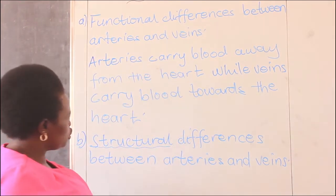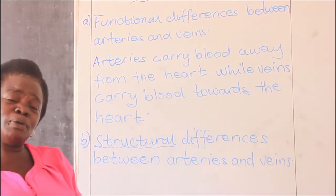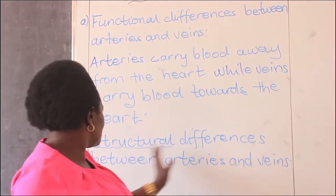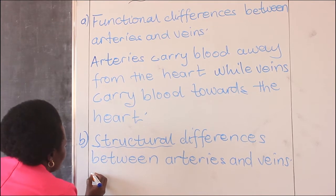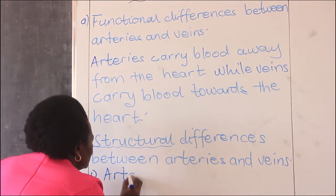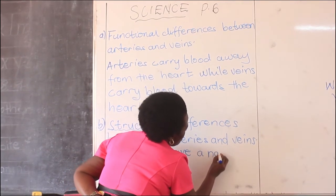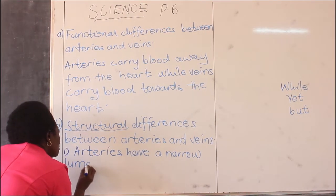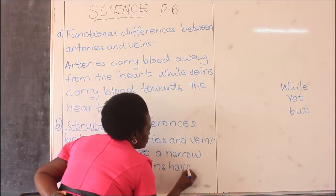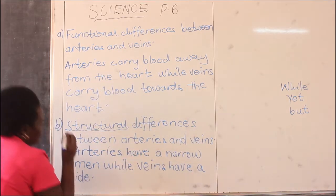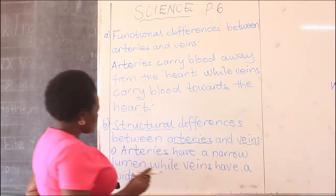We are going to speak them out and write them. We are getting them from the differences we've already written, for examination purposes. The first structural difference: arteries have a narrow lumen while veins have a wide lumen. That is the first structural difference between arteries and veins — in terms of their appearance.